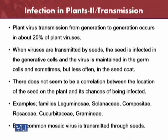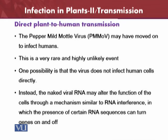Plant-to-human transmission is also possible. The pepper mild mottle virus may cause infection in humans, though this is a very rare and highly unlikely event. The possibility is that the virus does not infect human cells directly; instead, the naked RNA can alter the function of cells through a mechanism similar to RNA interference, in which certain RNA sequences can turn genes on and off, thereby causing disease in specific human beings.